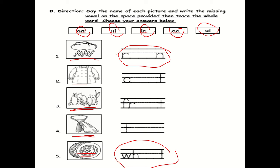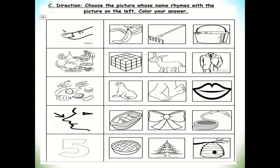Now let's go to the last part. For the last part, choose the picture whose name rhymes with the picture on the left, then color your answer. For the first box, we have 'nail'. Which picture rhymes with nail — is it peel, rake, or pail? Next, 'fruit'. Which picture rhymes with fruit — is it cube, mule, or soot?